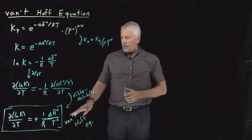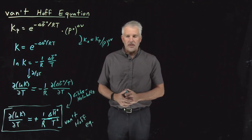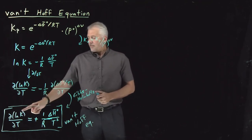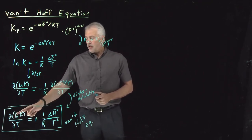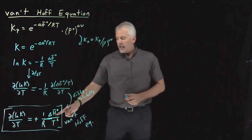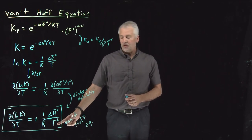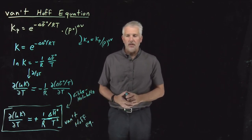That's given us the beginnings of what we were after when I said we were interested in the temperature dependence of the equilibrium constant. It tells us when I change the temperature, the rate at which the log of the equilibrium constant is changing with temperature is proportional to the enthalpy, inversely proportional to the temperature squared with this proportionality constant of 1 over R.